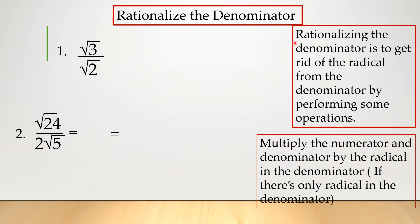Rationalizing the denominator is to get rid of the radical from the denominator by performing some operations. To do that, multiply the numerator and the denominator by the radical in the denominator if there is only a radical in the denominator. I'm going to show you a different given here.